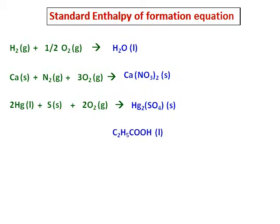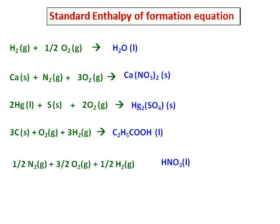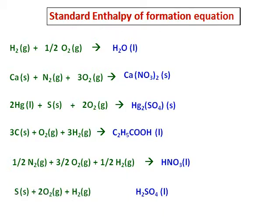For C₂H₅COOH, the elements are carbon, oxygen, and hydrogen, written in their standard forms: O as O₂ and H as H₂. For nitric acid liquid, it is formed from nitrogen, oxygen, and hydrogen in their standard states with appropriate balancing. Sulfuric acid is made of hydrogen, sulfur, and oxygen, and balancing is done only on the reactant side because the product must have only one mole.